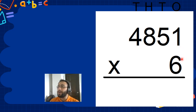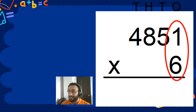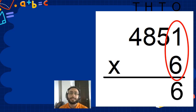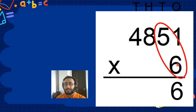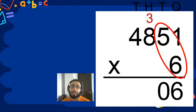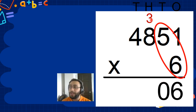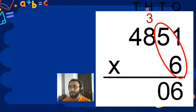Okay, we start from the ones. 8 times 1 equals 8. Super easy. 8 times 5 equals 40. We put 0 here. We carry the 4 to the next digit, which is in the hundreds.